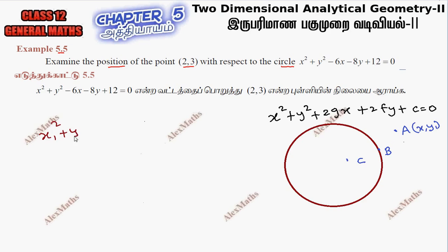plus y1 square plus 2gx1 plus 2fy1 plus c equal to one value. Suppose this value is greater than 0. This point is lying outside the circle, which implies x1, y1 lies outside the circle.